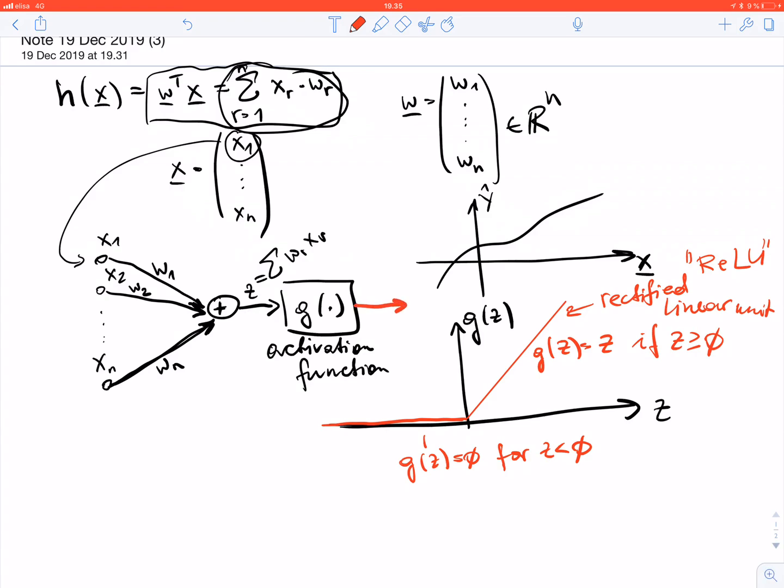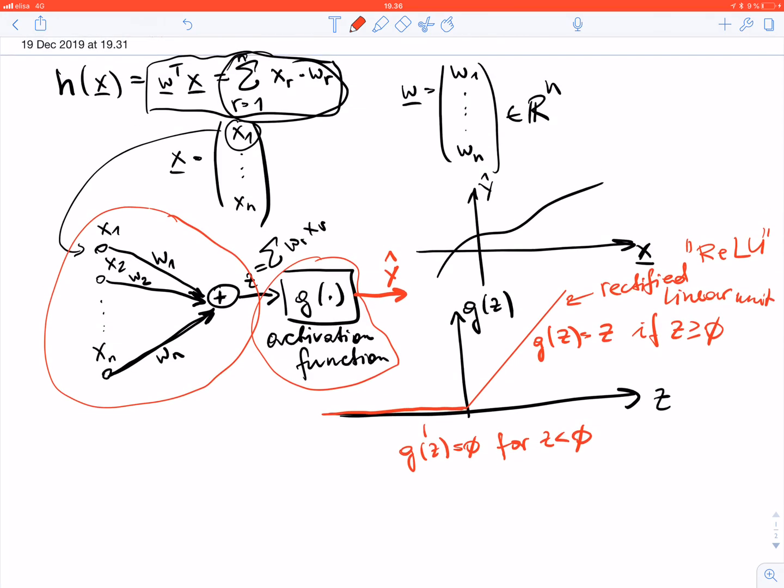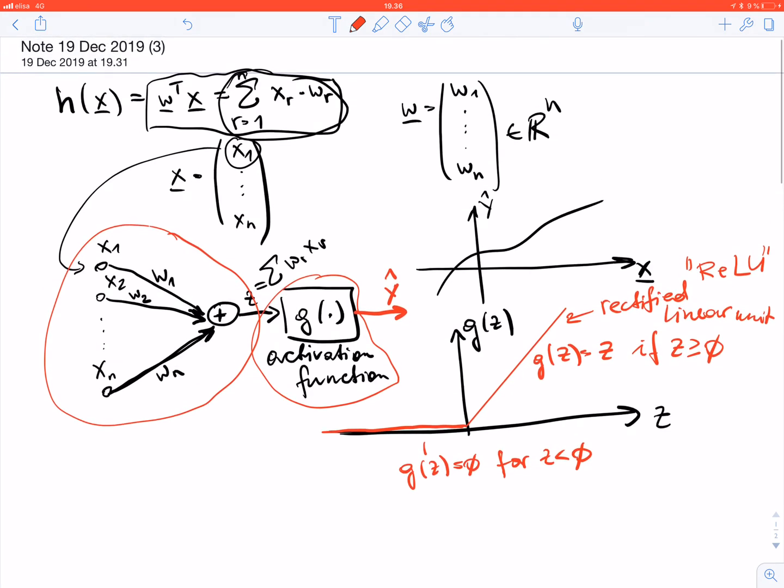We use this output of this rectified linear unit as the predicted label. Whereas this simple mapping now, just combining a linear predictor with this activation function, does not give us much more power in the representation abilities. However...